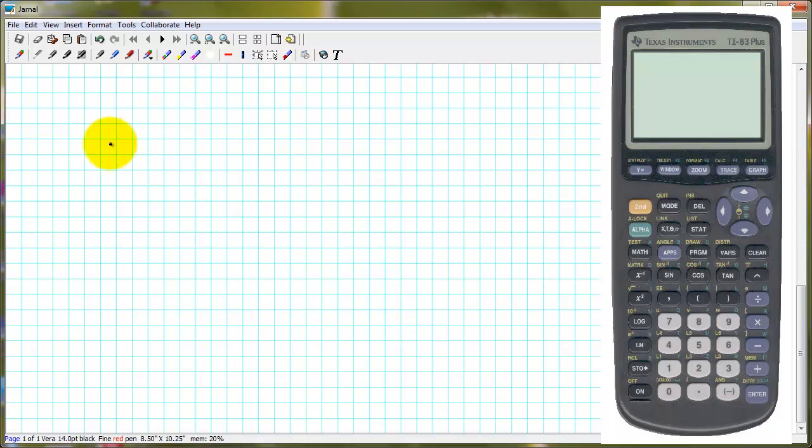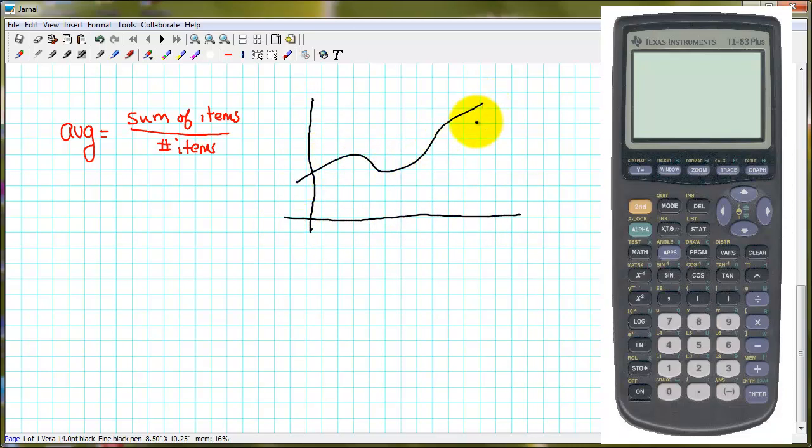We all know from basic math that if we have a list of discrete items, maybe they are scores on a test, we can find the average by summing up all of the items and dividing by the number of items. But when we're dealing with functions, let's just sketch a function to work with.